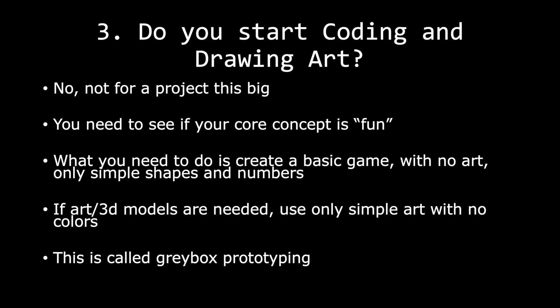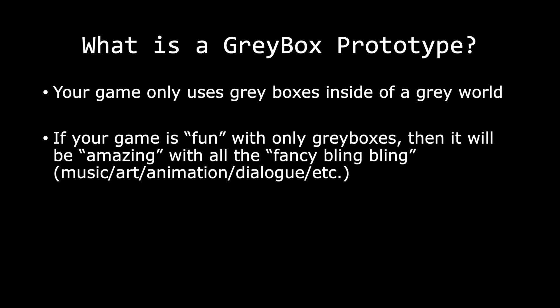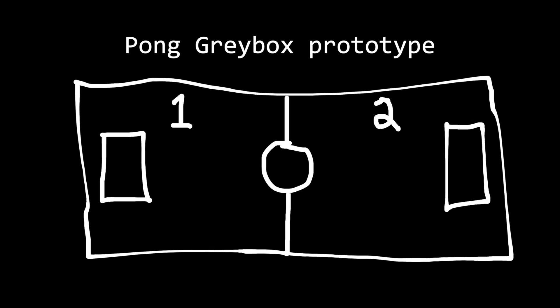What you need to do is create a basic game with no art and only simple shapes and numbers. If art and/or 3D models are needed, use only simple art with no colors. This is called gray box prototyping — when your game or prototype only uses gray boxes inside of a gray world. If your game is fun with only gray boxes, then it will be amazing with all the fancy bling bling: music, art, animation, dialogue, and so forth. Since you're making a Pong clone with multiple levels, the gray box prototype will just look like Pong — and that is what we will be making in this series.